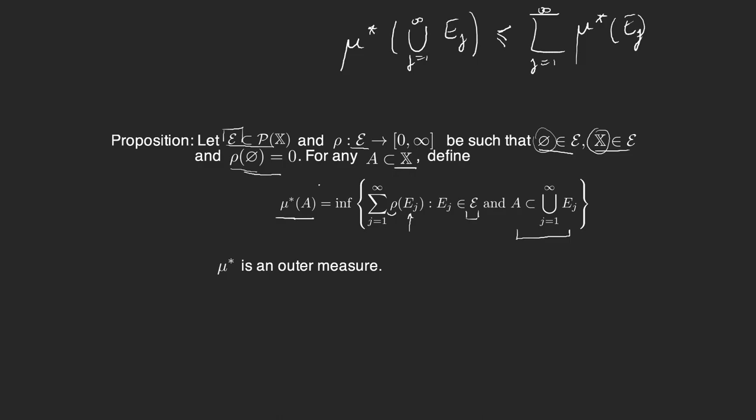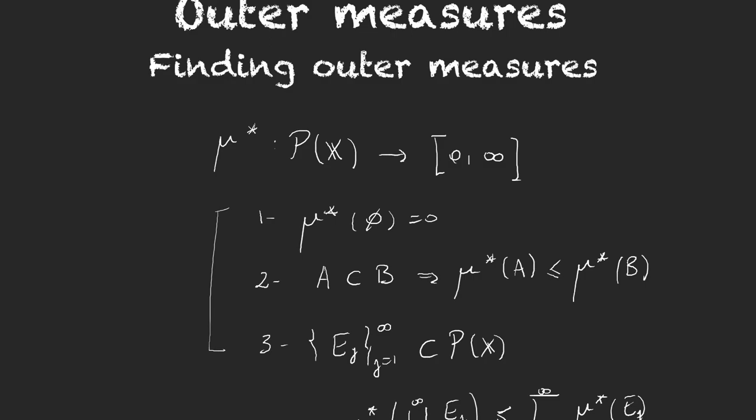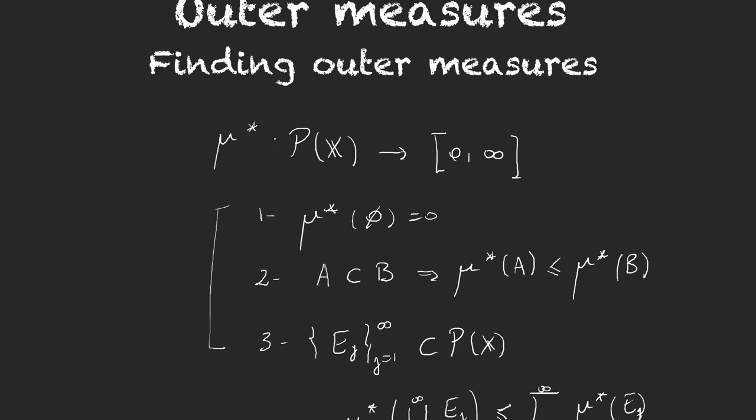Let's prove this proposition. We have to prove that μ* is an outer measure, and for this we have to prove that it satisfies these three properties. Let's start with the first one: we have to prove that μ*(∅) = 0.